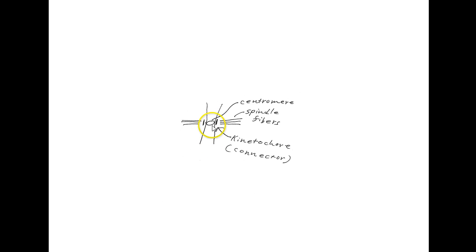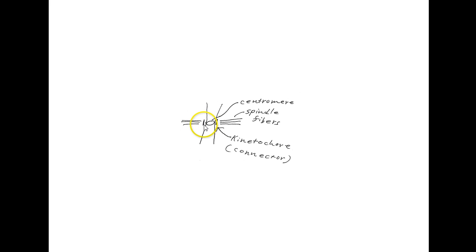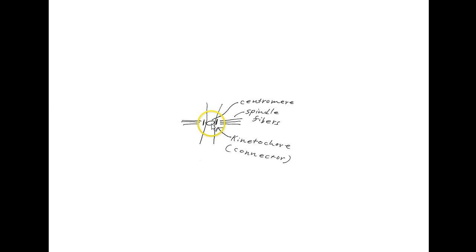Here's our kinetochore-spindle fiber-centromere structure. A chromatid comes down through here, and here's another chromatid. This is our centromere holding the two chromatids together. On the surface of the centromere we have what's called the kinetochore — think of it as a connector. The spindle fibers are strands of microtubule proteins that radiate out from either end of the cell and latch on to the chromosomes at the kinetochores on the centromere.